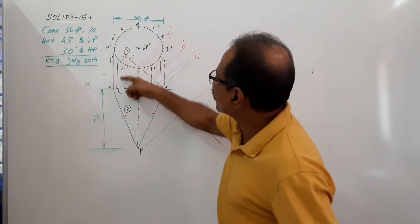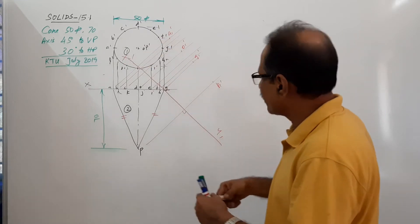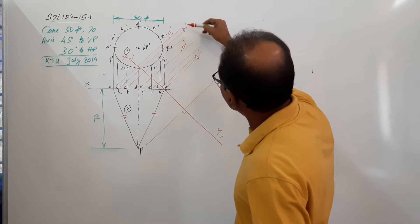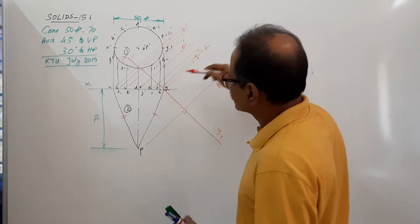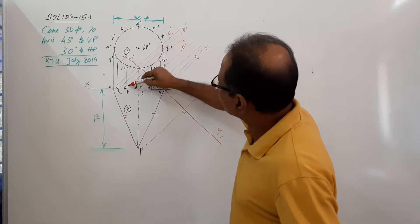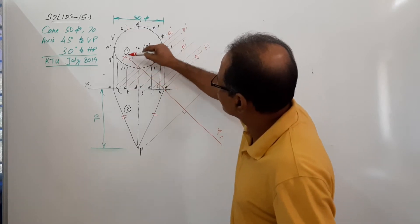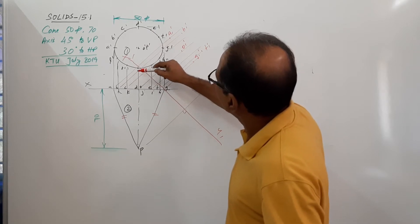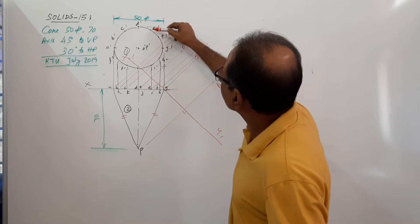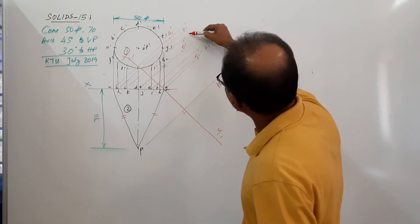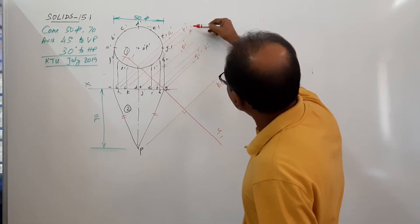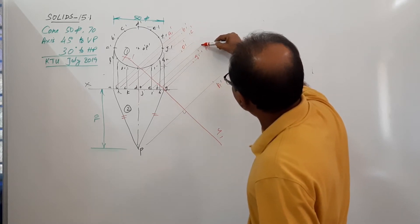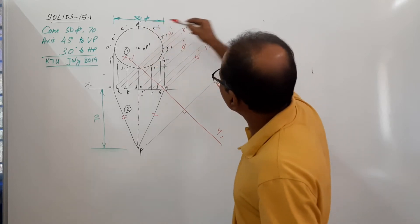This much distance above, you have got b-dash and the same distance above f-dash. So on the projector through B you will get b1-dash and f1-dash. This distance above c-dash and e-dash — on the projector through C you will get c1-dash and e1-dash.